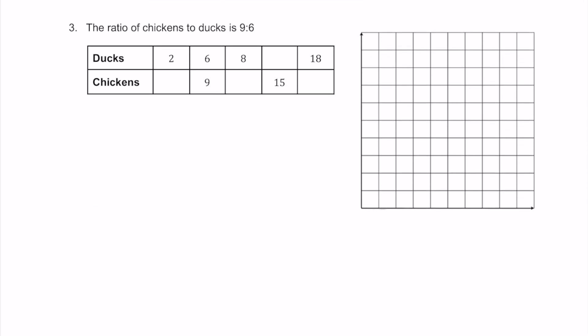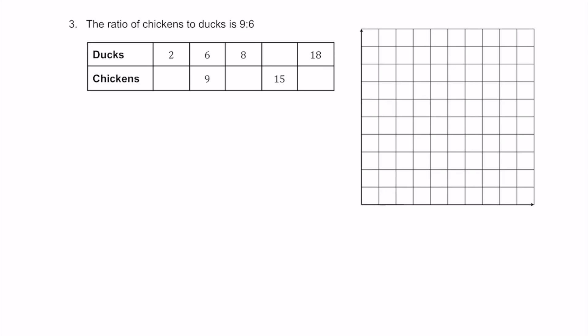Here's number 3. For number 3, the ratio of chickens to ducks is 9 to 6. Ducks will represent our x-axis — that's on the top row, with 6 ducks. Chickens go along the y-axis, represented by 9. So we have a ratio of 9 to 6: every 9 chickens we have 6 ducks, or every 6 ducks we have 9 chickens.